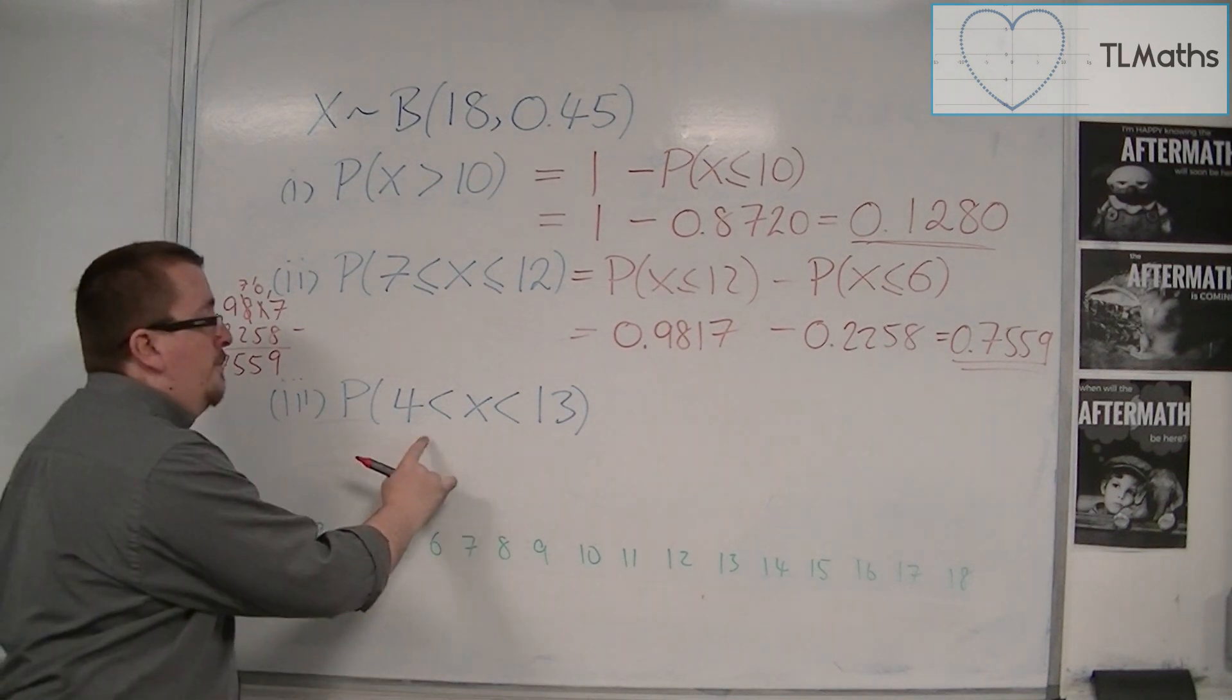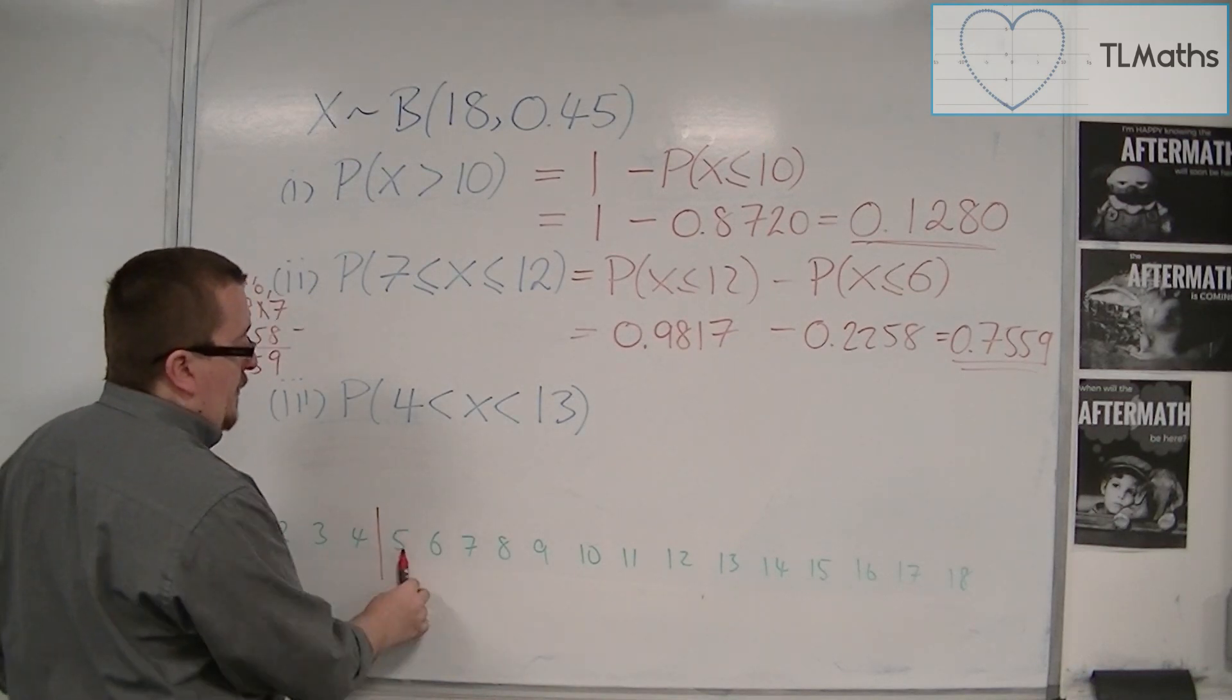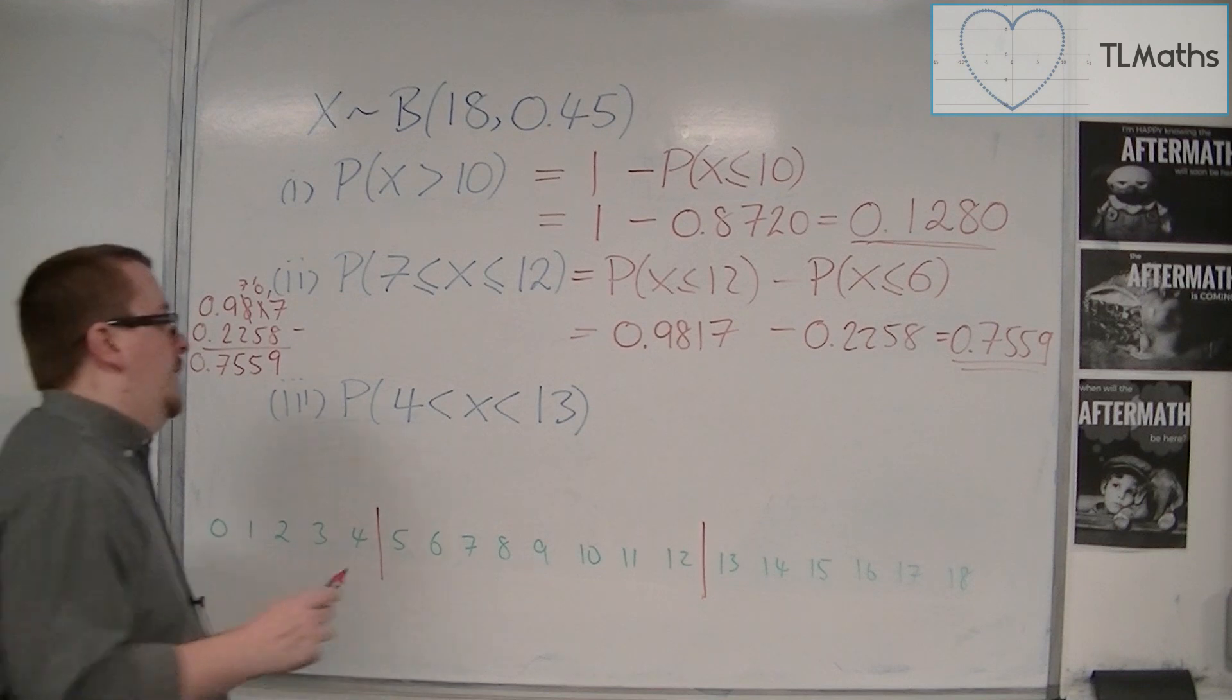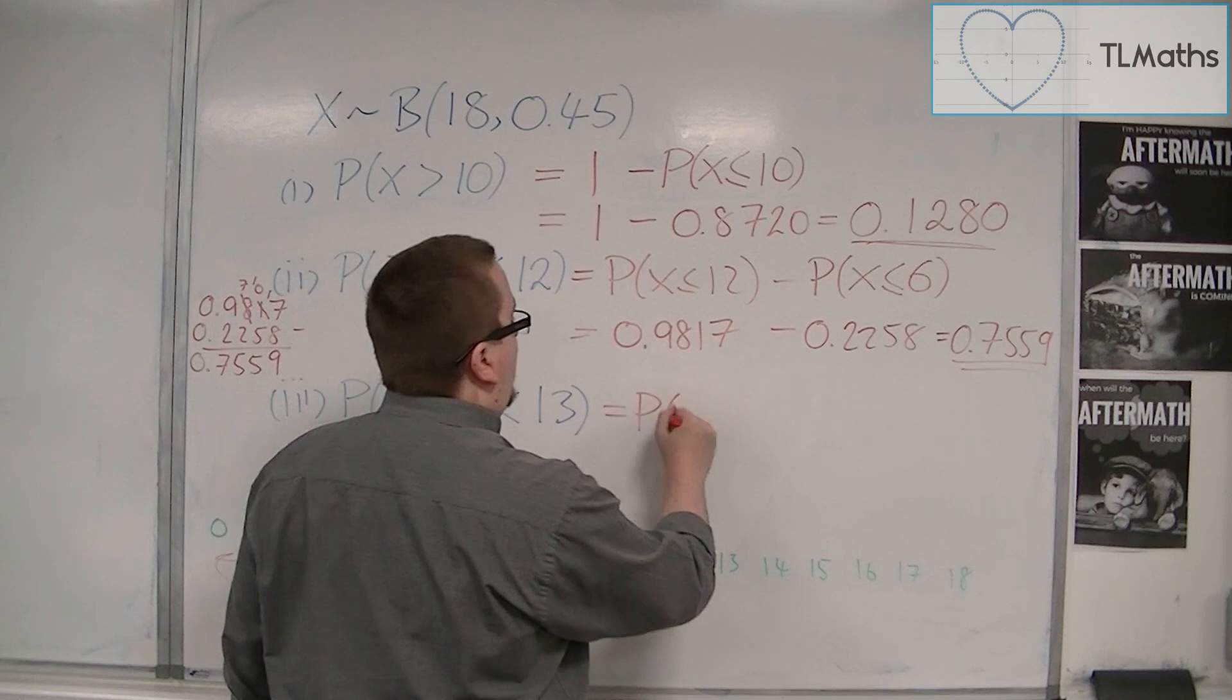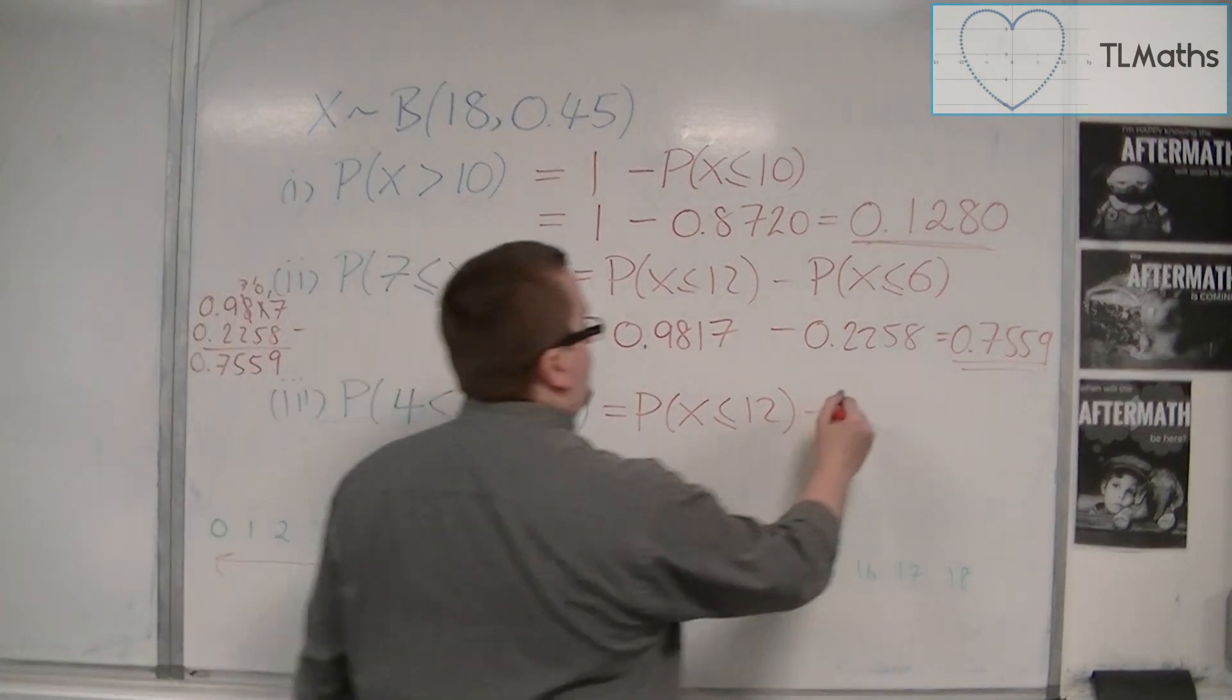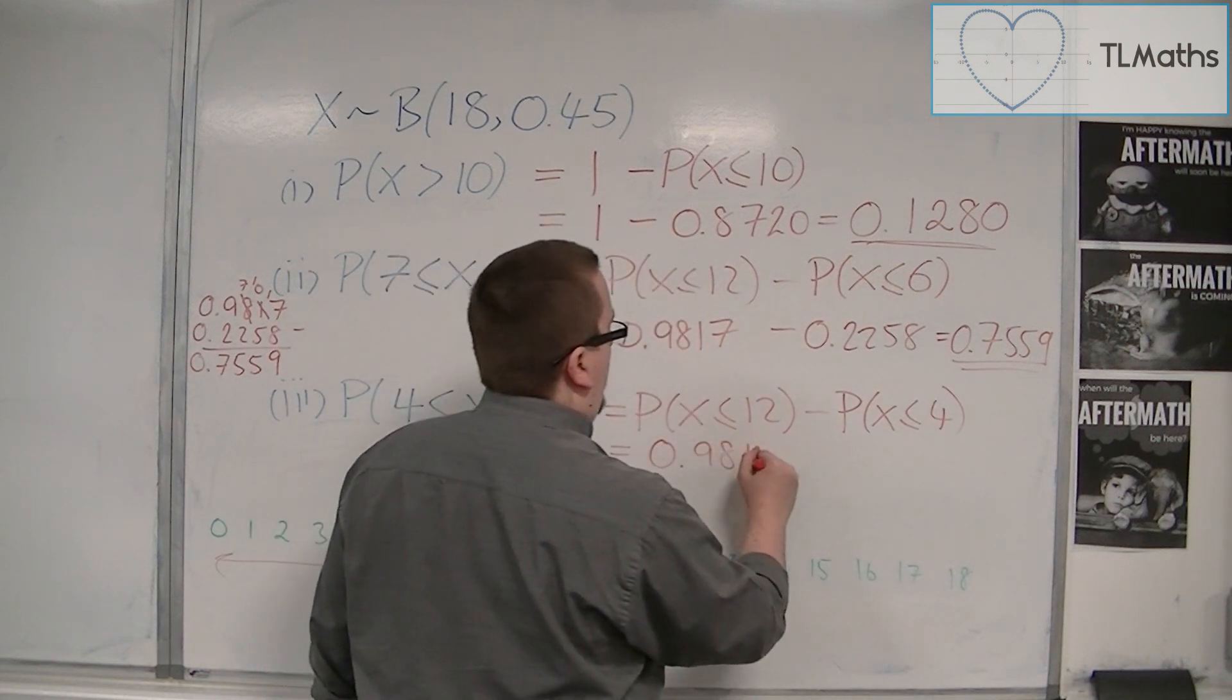And this time, I want from 4 to 13, but I don't want to include 4 or 13. So I want to cut out the 4, I'll have 5, 6, 7, 8, 9, 10, 11, 12, but not 13. So I want from 12 all the way down to 0, so the probability of x being less than or equal to 12, and take away the bit that I don't want from 4 down to 0. Now I already know what that one is because I used it there, 0.9817.